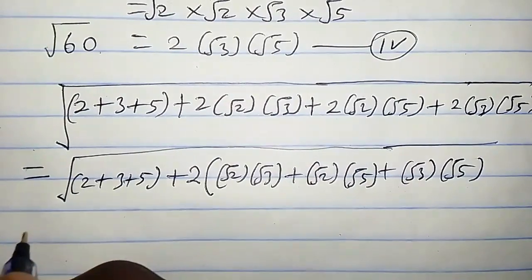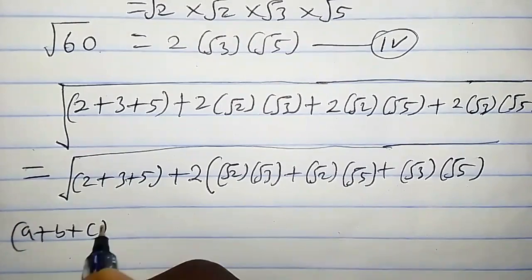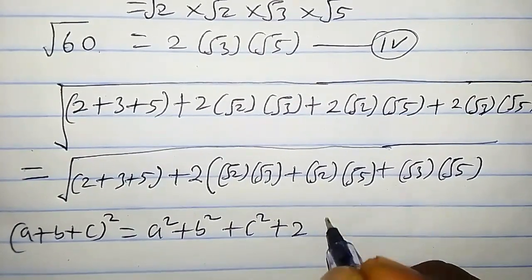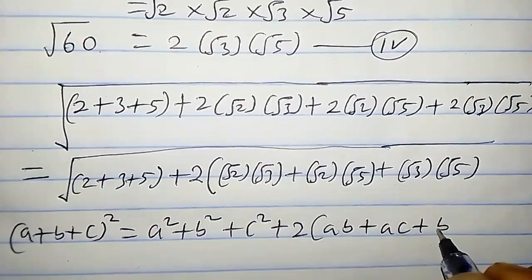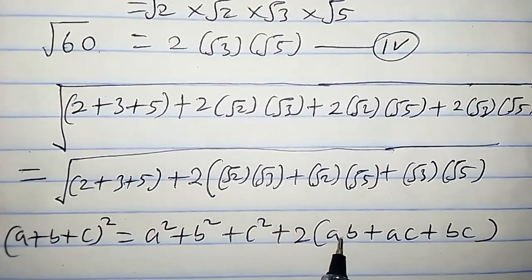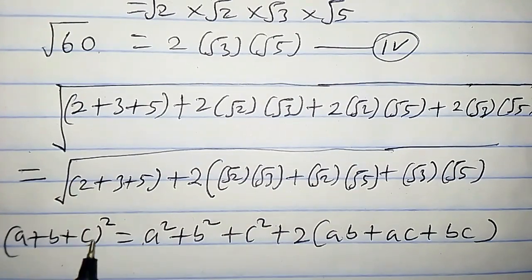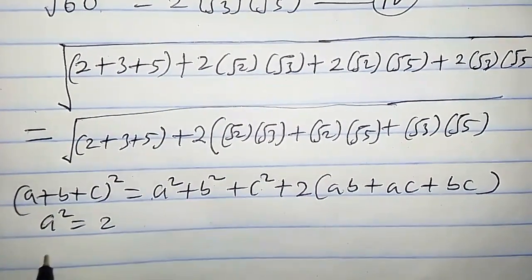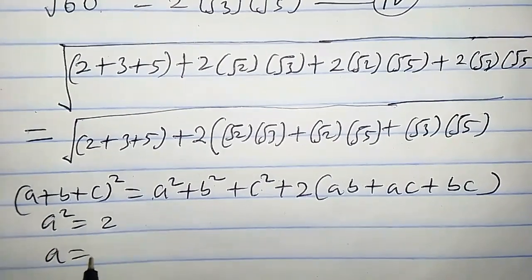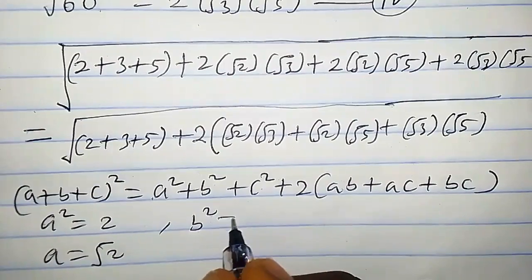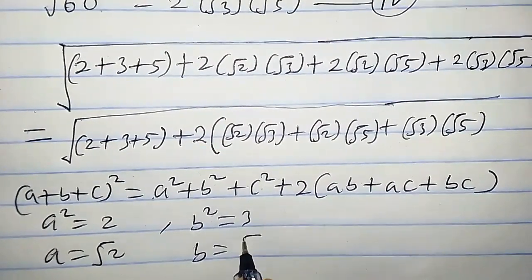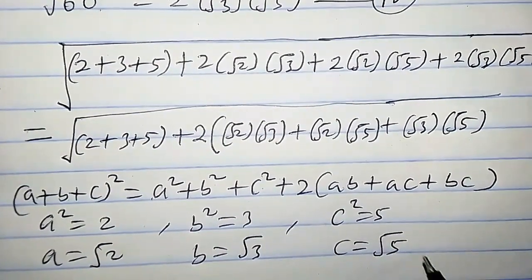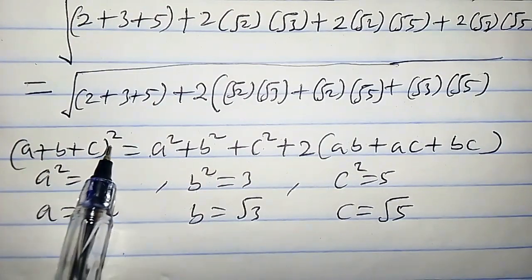We need to recall a property: if we have (a+b+c) squared, when we expand it we get a²+b²+c² plus 2(ab+ac+bc). By comparing, we see these expressions are similar. So a²=2, b²=3, and c²=5. Taking square roots: a=√2, b=√3, c=√5. Since the right-hand side matches the left-hand side, we plug in these values.